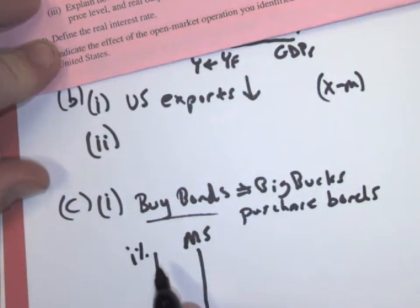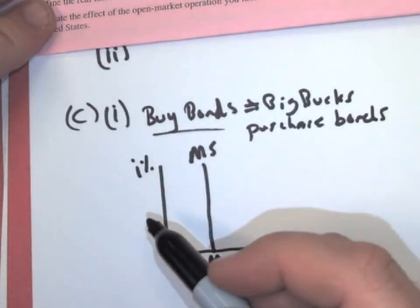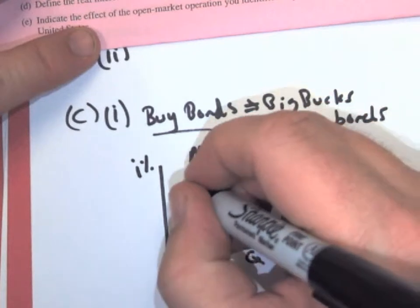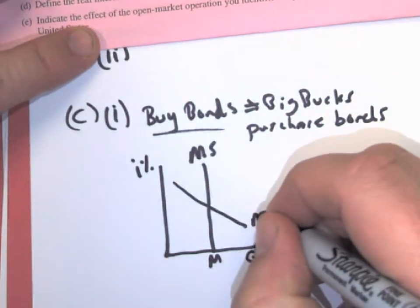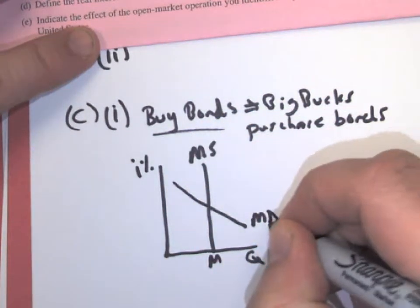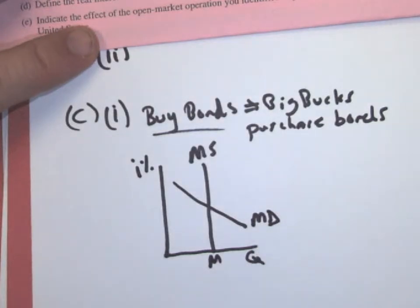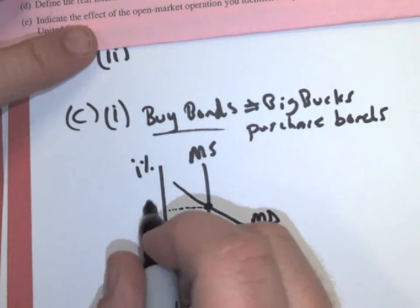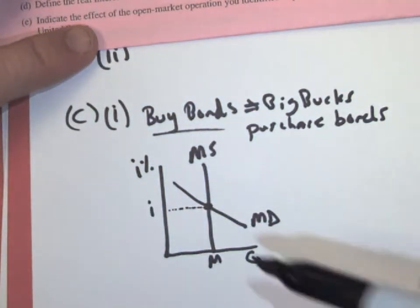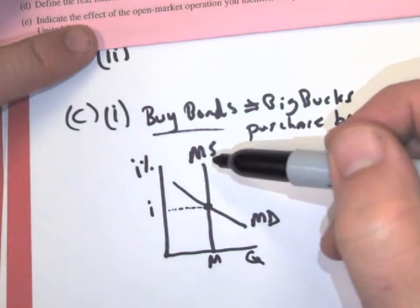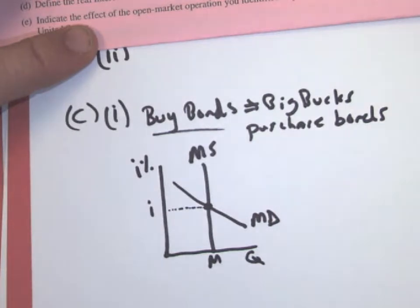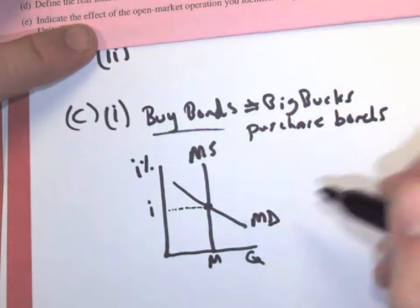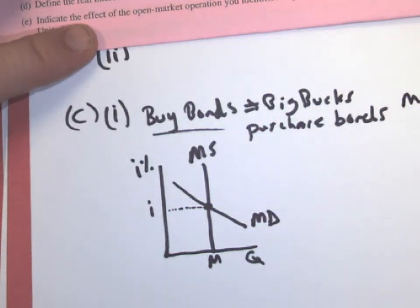And remember, a lowercase i with a percent is the nominal interest rate. So we have money supply and then money demand, which is either asset or transaction demand, whenever people need money to do those things. So the level where these two cross, remember everything is a supply and demand graph, just with different labels. So the money supply, how much is in circulation, and money demand, how much people need for transactions and assets. So we know money supply is going to go up from what we solved up here.